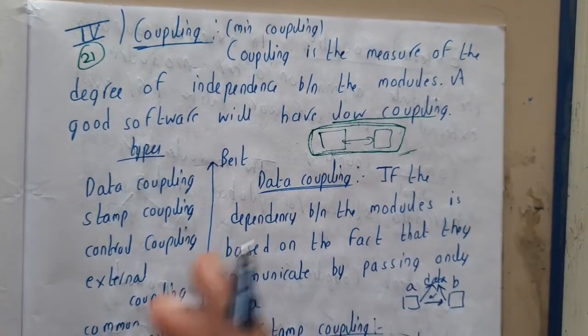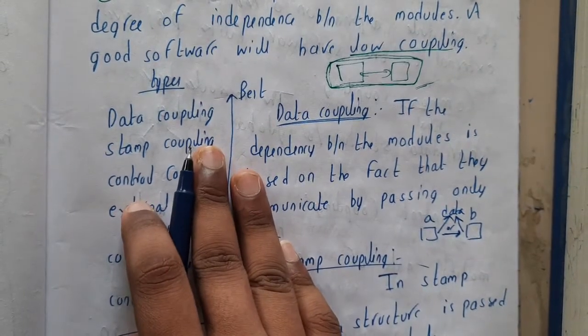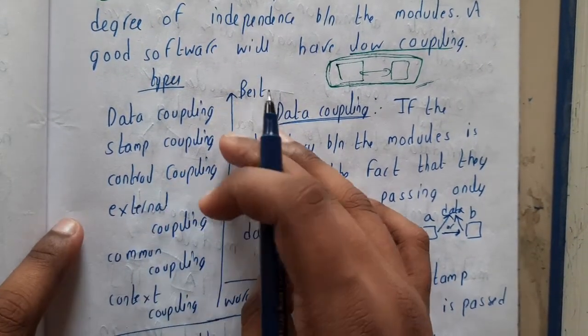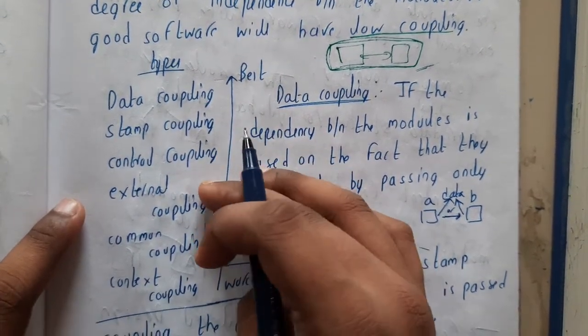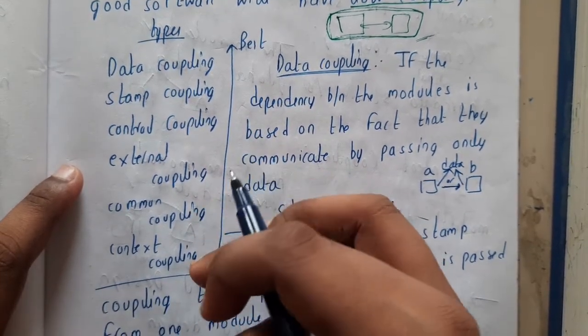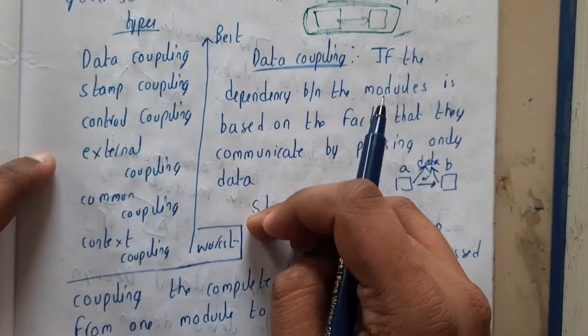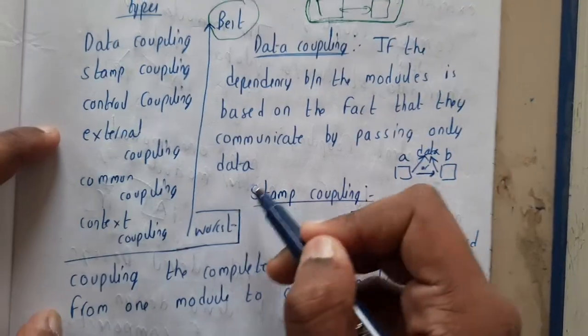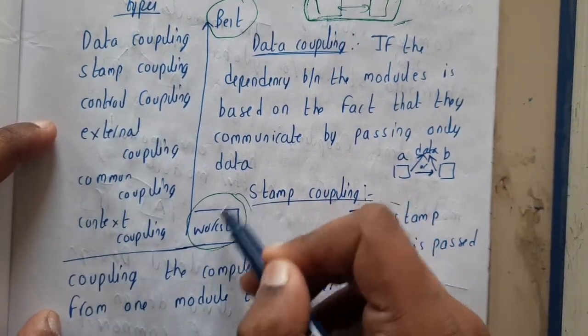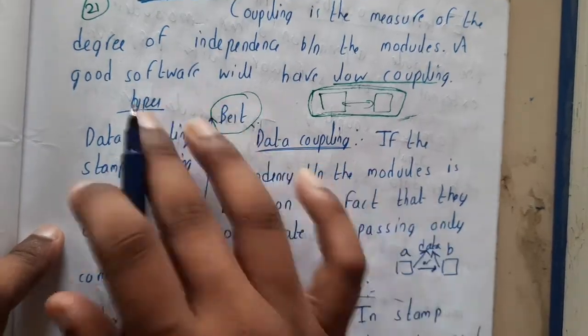We are requesting for low coupling. The types are data coupling, stamp coupling, control coupling, external coupling, common coupling, and context coupling. This is best and this is worst. Here it is indirectly low and here it is high. We don't like these things and we like the topmost things.